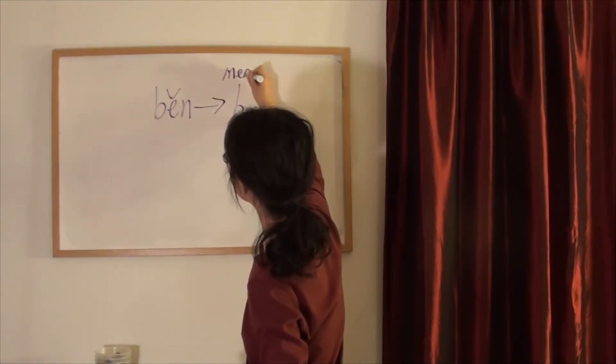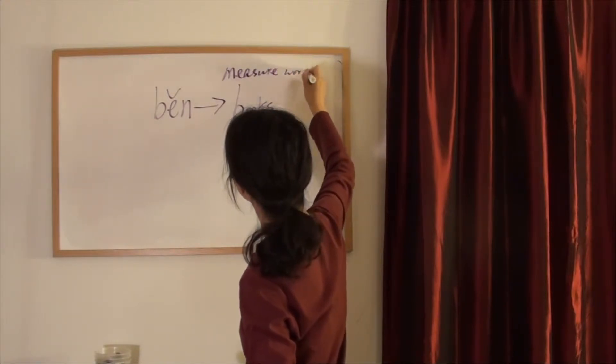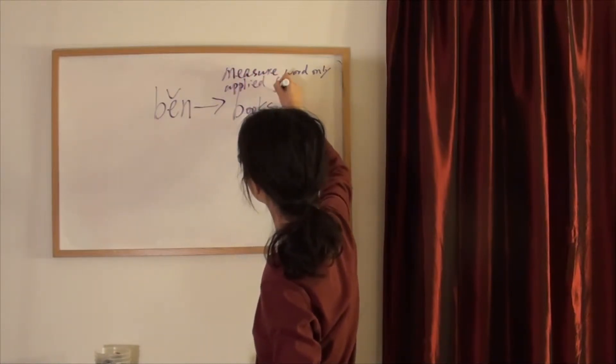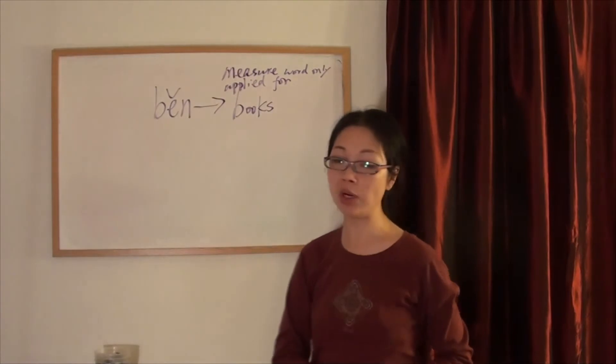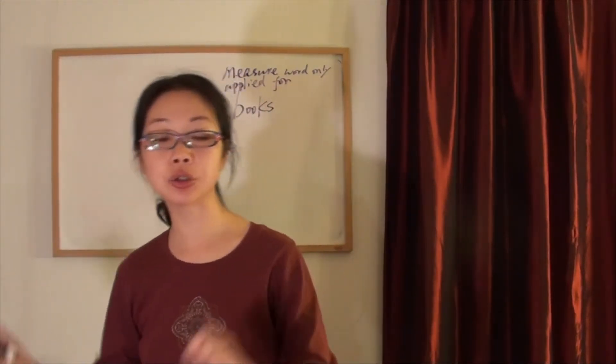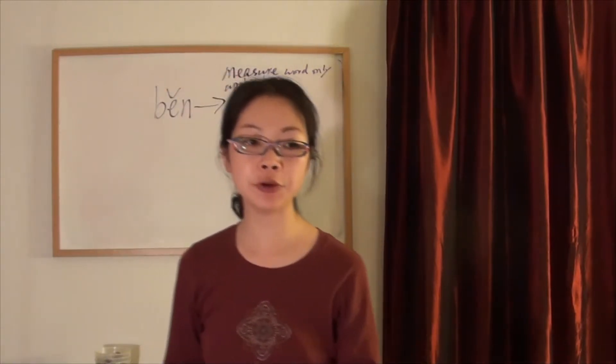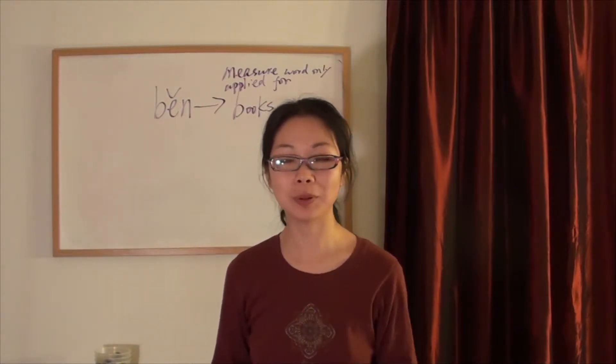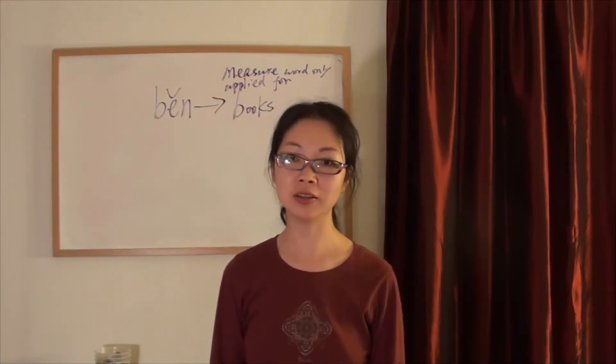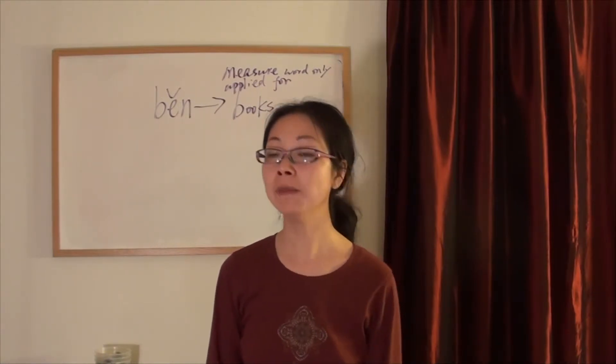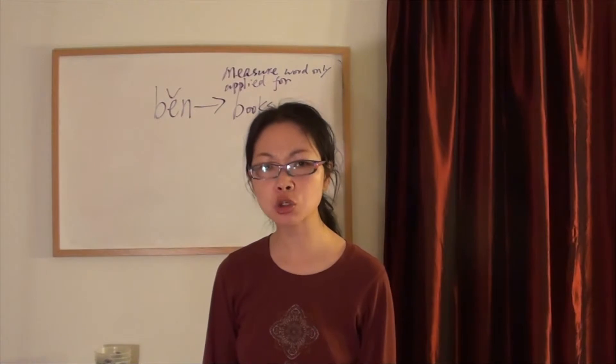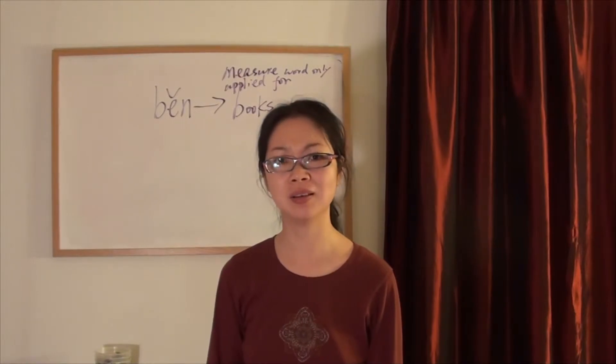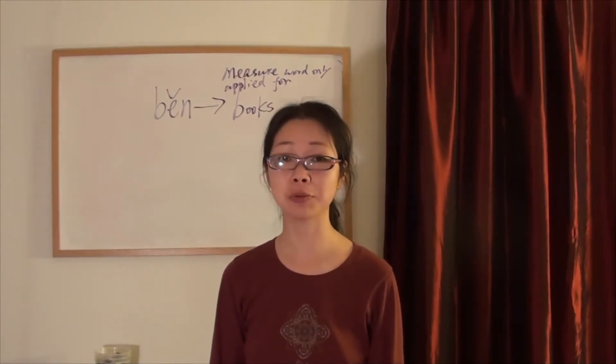If you say 一本书, 两本书, we will probably know, oh, he's just a learner of Chinese or he's a foreigner. But if you just say 一书, 二书, 三书, Chinese people will totally be lost. What are you talking about?